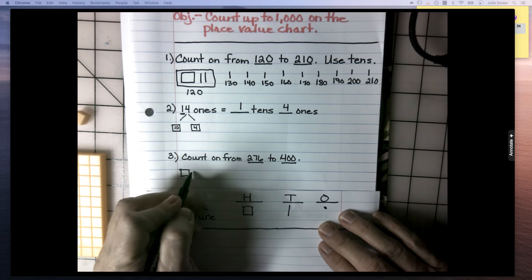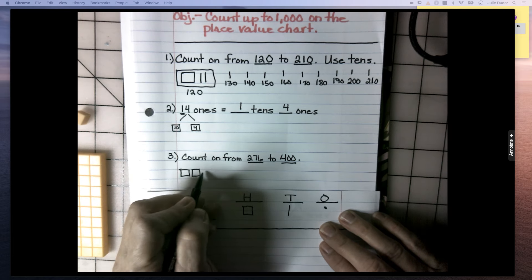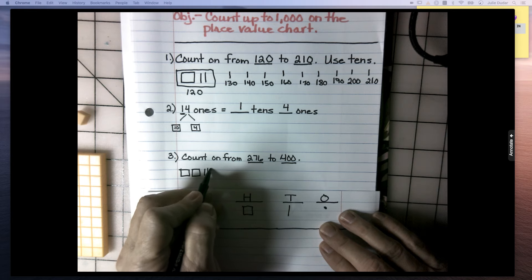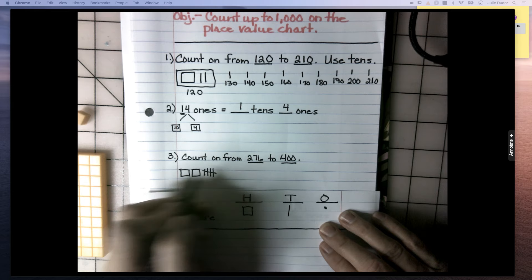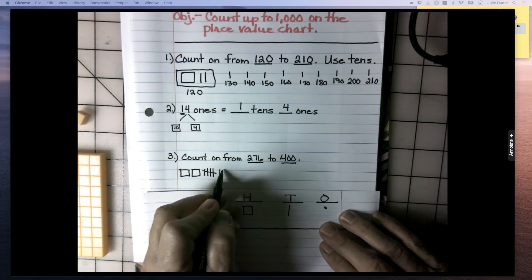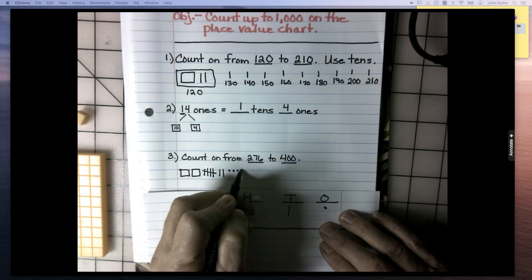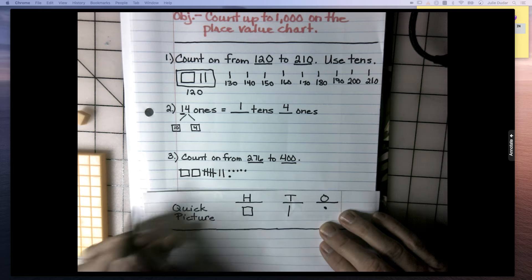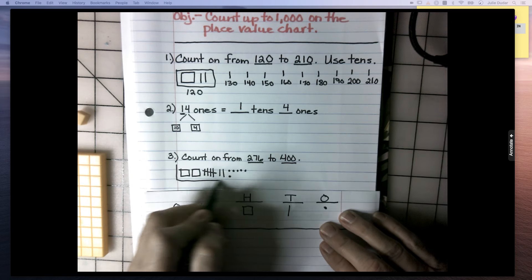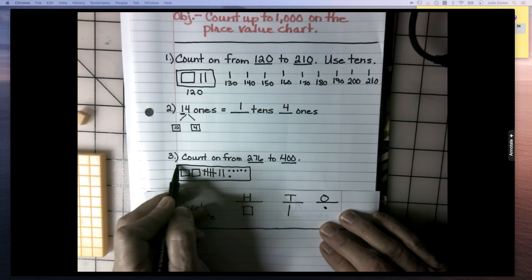Count with me. 100, 200, 210, 220, 230, 240, 250, 260, 270, 271, 272, 273, 274, 275, 276. And I'm going to draw it and box it.